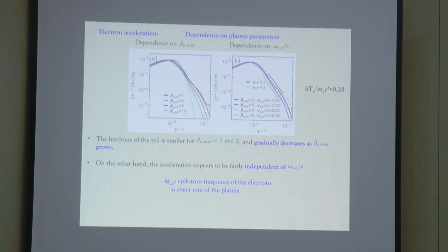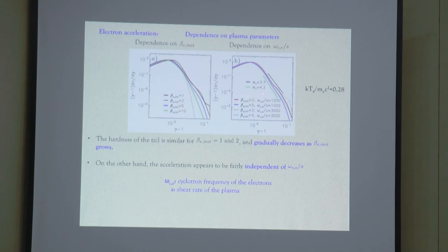The fact that we see acceleration in simulations doesn't necessarily mean it will exist in Sagittarius A star. For the case with initial electron beta of 2, we tested magnetizations of 3,000 and 1,200. What we see is that as we almost triple the magnetization, the acceleration doesn't disappear — it actually gets a little bit harder. This is excellent news because we need this acceleration to survive this modest increase, since in reality the magnetization should go to much larger values.